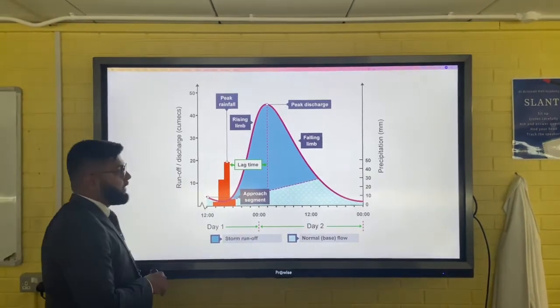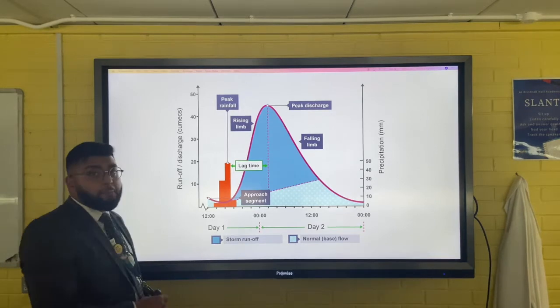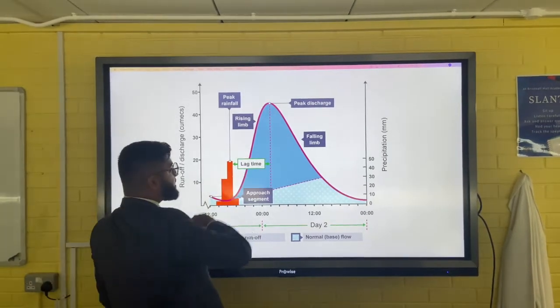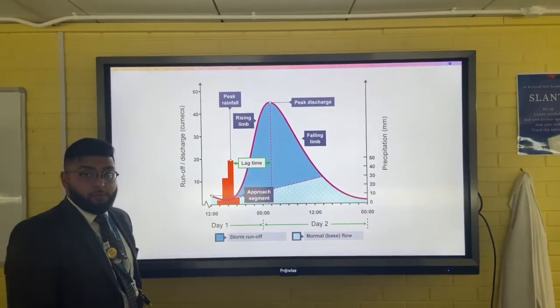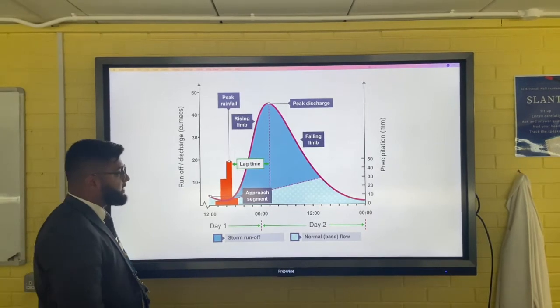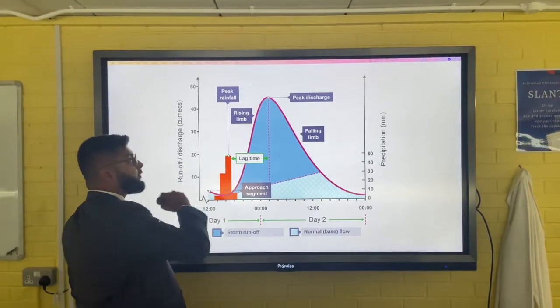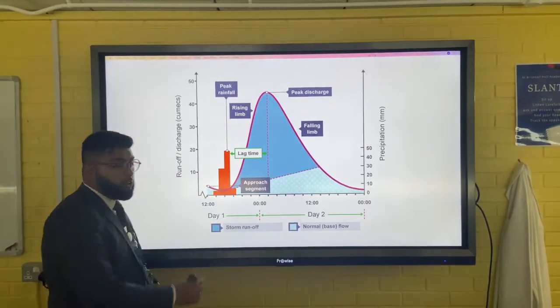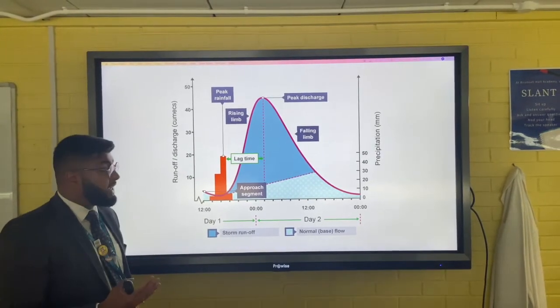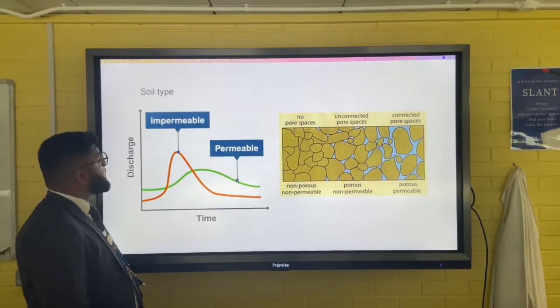The time between peak rainfall and peak discharge is known as the lag time. There are a number of factors that can affect how long between the peak rainfall and the peak discharge, or when the most water is in the river or the river's at its highest.